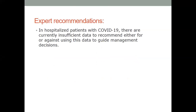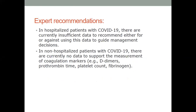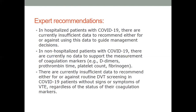With regard to coagulation parameters, experts recommend that for hospitalized patients with COVID-19, there are currently insufficient data to recommend either for or against using this data to guide management decisions. For non-hospitalized patients, there is currently no data to support measurement of coagulation markers like D-dimer, prothrombin time, platelet count, or fibrinogen to predict which patients will have a downhill course. We also cannot use these parameters to justify active screening for VTE.